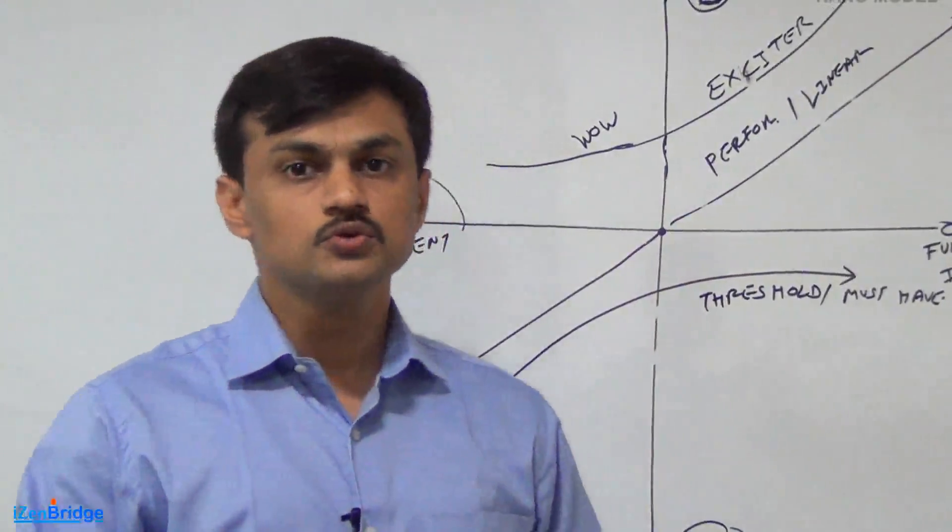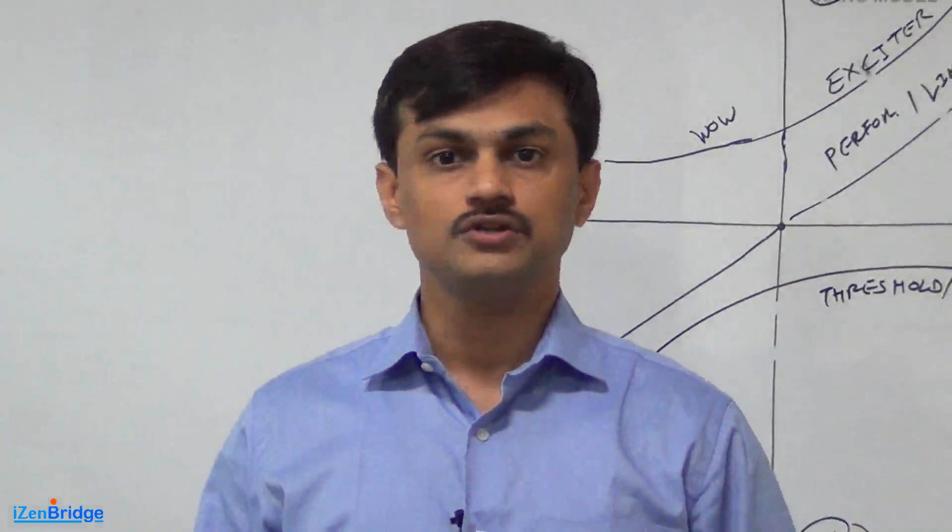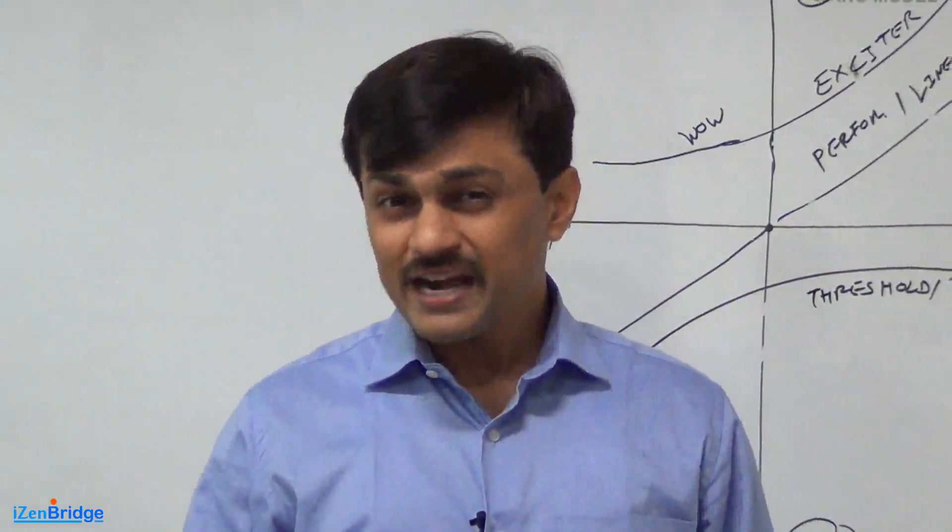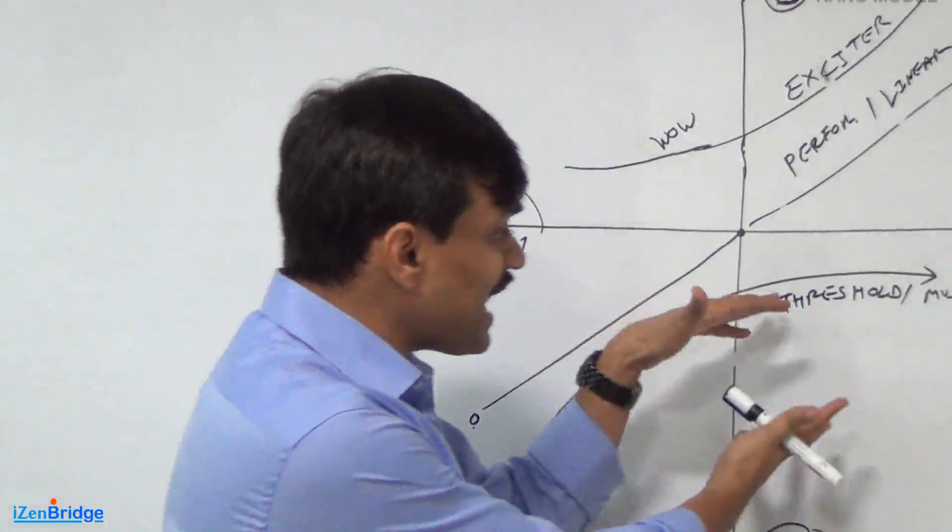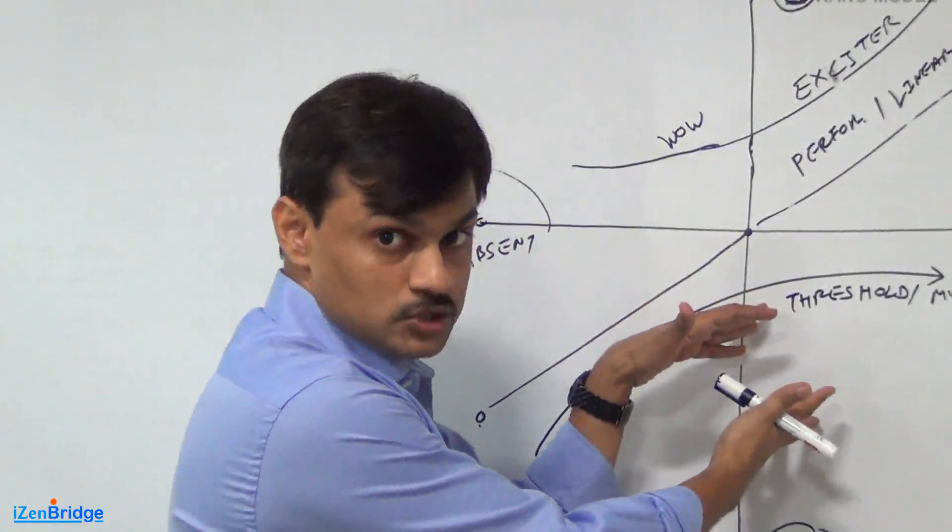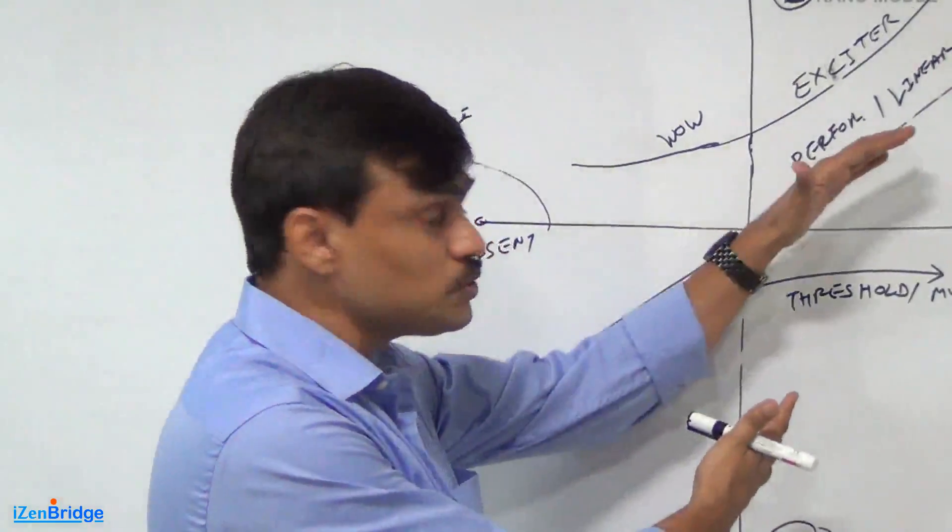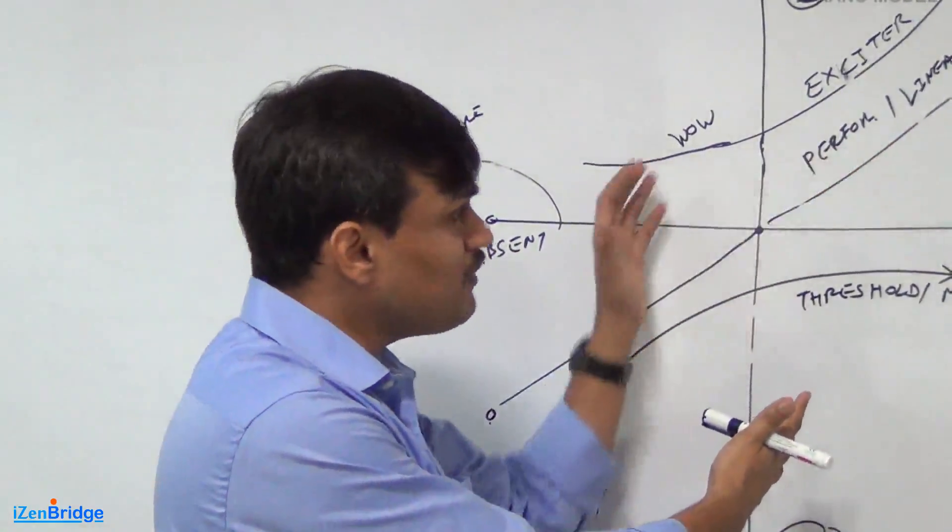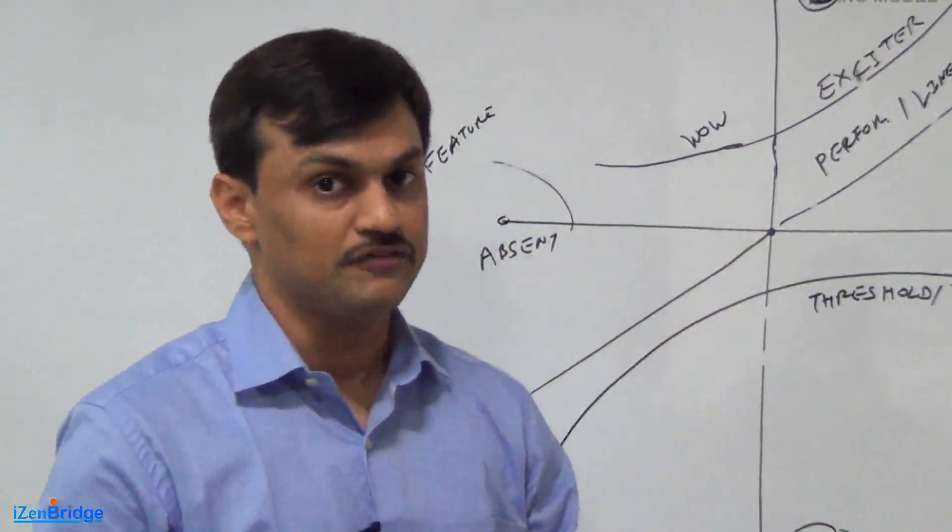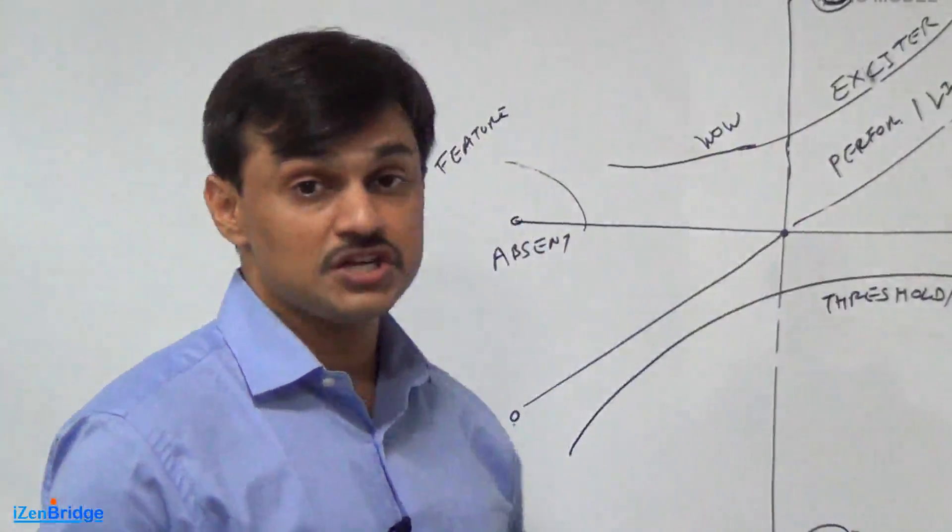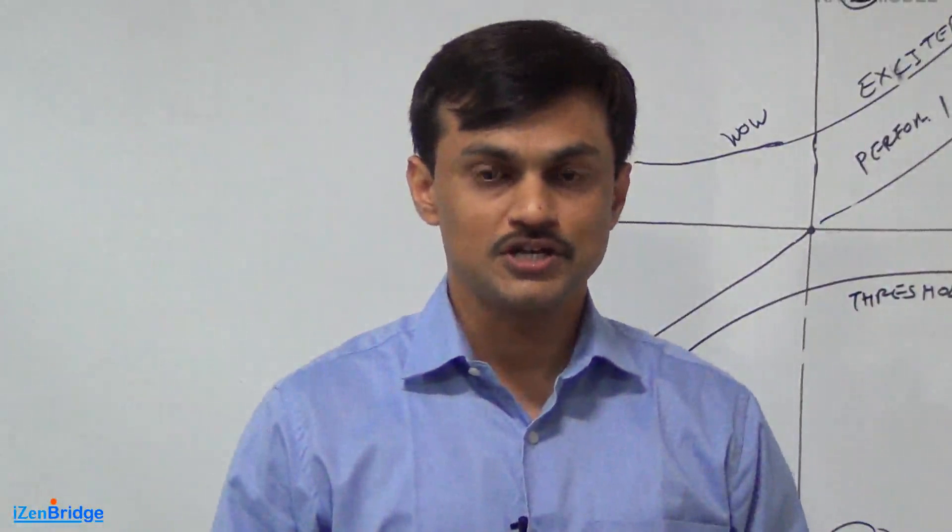So Kano model can be used for prioritizing requirement, can be used when you are doing a brainstorming with your stakeholders in order to identify the scope of the first release because when we try to deliver something we target that at least threshold should be delivered. So our first release cannot go live till the time we don't have a threshold. We should try to include as many linear features we can and we should put some of the exciter so it brings some spice in our delivery. So in various circumstances you can do this visualization or Kano model technique in order to have a fruitful discussions with the stakeholder.